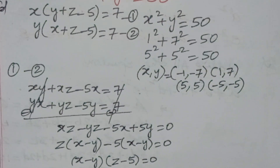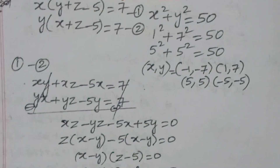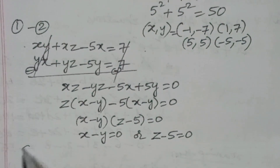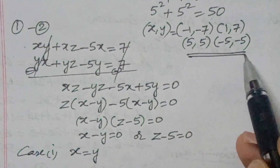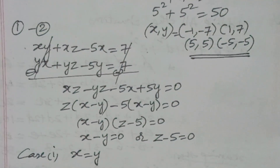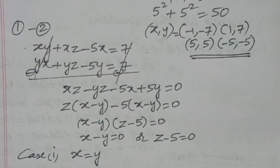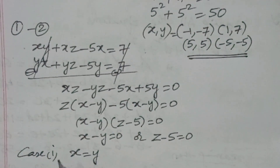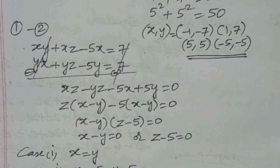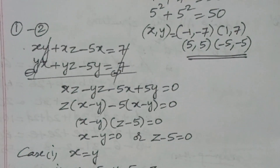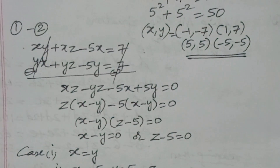So either x − y = 0 or z − 5 = 0. Case 1: x = y. We get four sub-cases. First sub-case: x = 5, y = 5. Substituting into equation (1): 5(5 + z − 5) = 7, so z = 7/5.